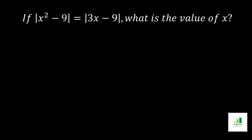Welcome to AMS. Today in this video we are going to solve an absolute value math problem. Our given question is: if |x² - 9| = |3x - 9|, then what is the value of x? Our target is to find the value of x from this expression.